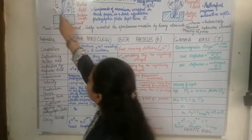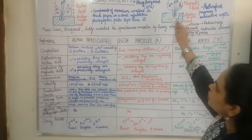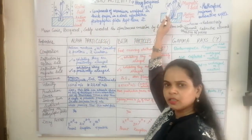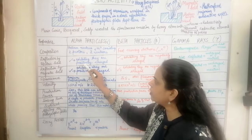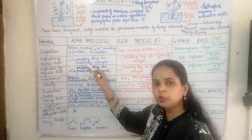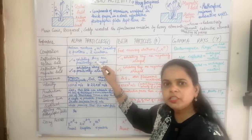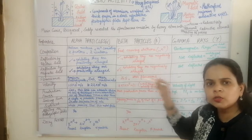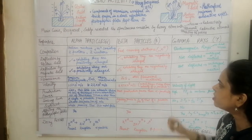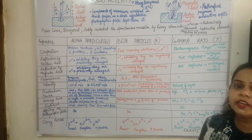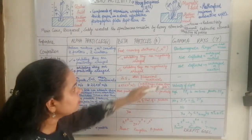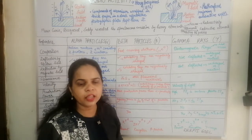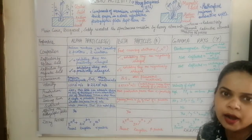Alpha and beta particles are deflected to opposite ends when placed in an electric or magnetic field. Alpha particles deflect toward the negative plate, confirming they are positively charged. Beta particles deflect toward the positive plate, confirming they are negatively charged. Gamma rays, however, are not deflected by either electric or magnetic fields, confirming they are neutral.